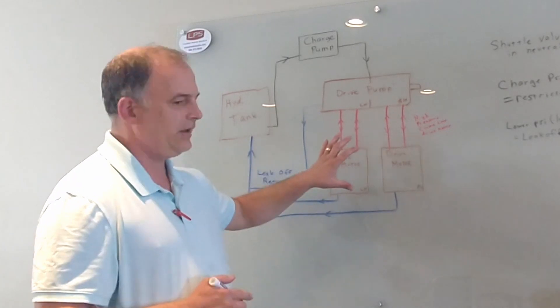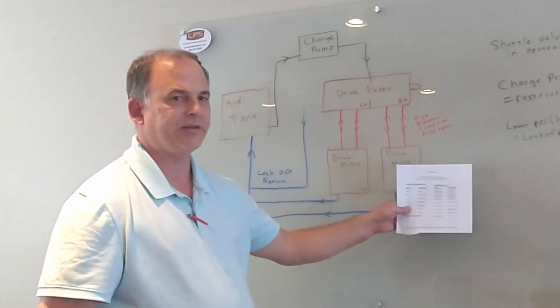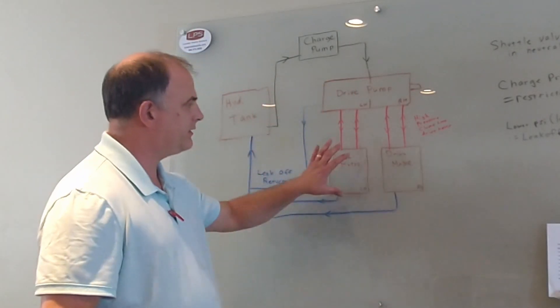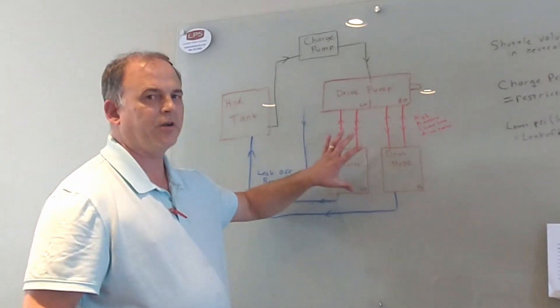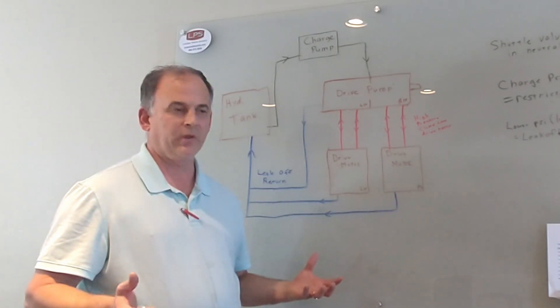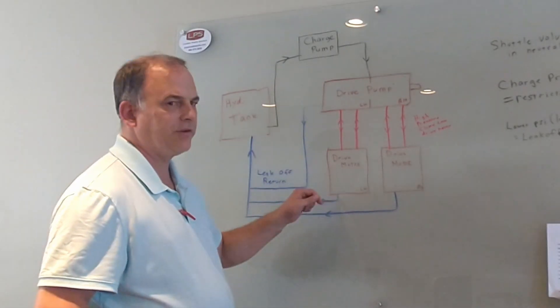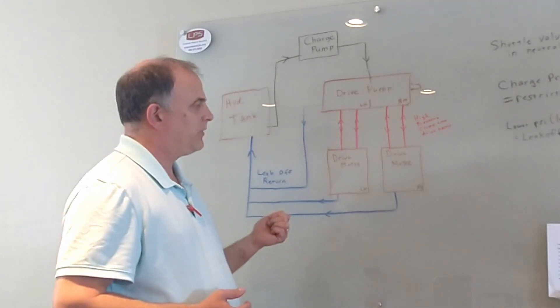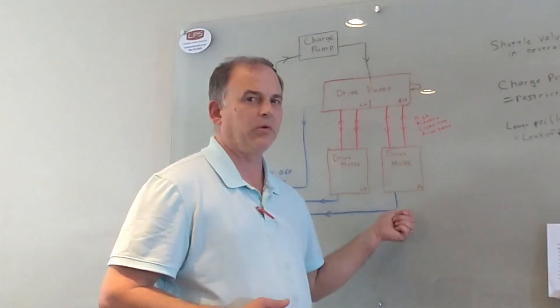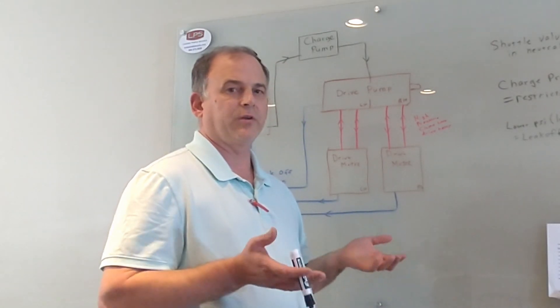And he disconnected the motor. The charge pressure went back up, so he assumed the motor was the problem. Well yes, the charge pressure went up because the replenishing fuel isn't leaking off. If he would have connected it back up and disconnected the other motor, I believe the same thing would have happened - the charge pressure would have went back up.